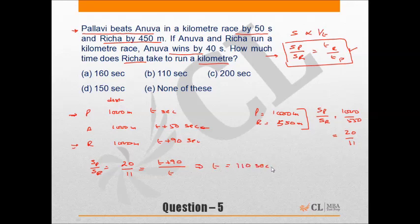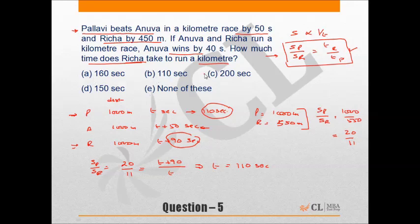T = 110 seconds is the time Pallavi takes to finish the race. Risha takes T + 90 = 200 seconds to run the kilometer. The correct answer is choice C, 200 seconds.